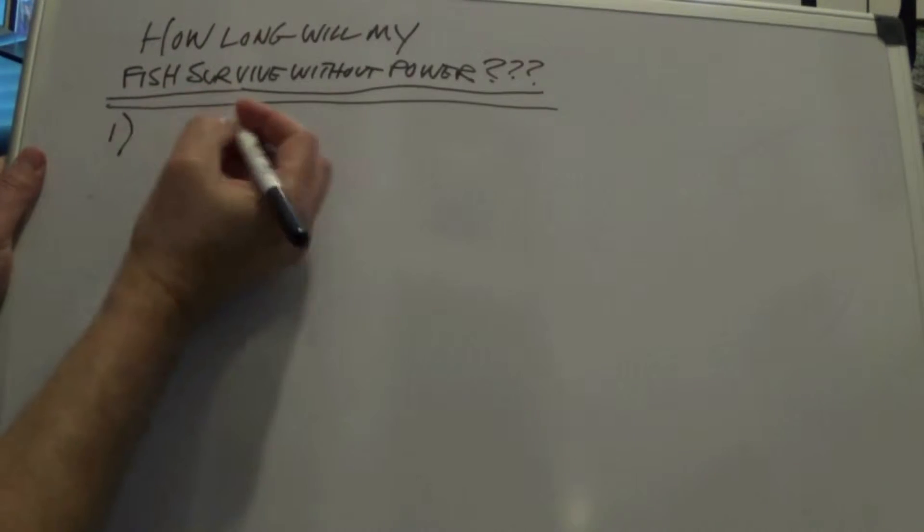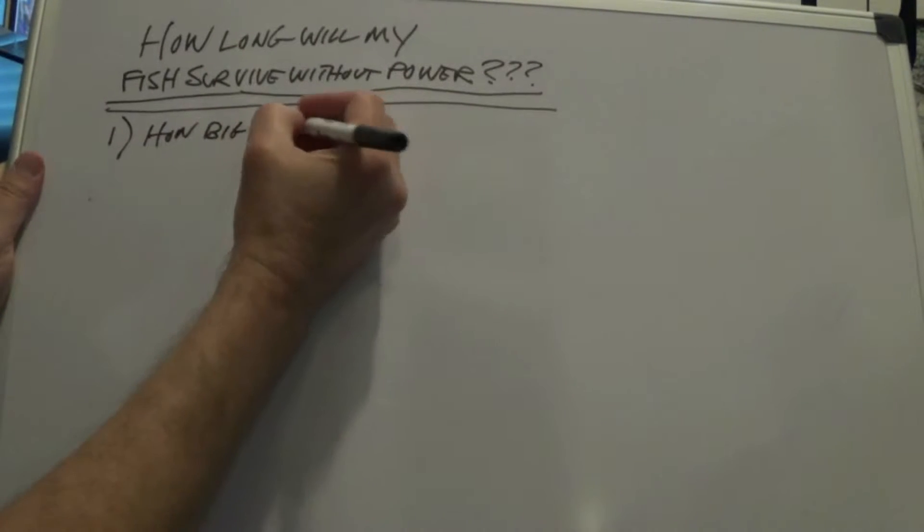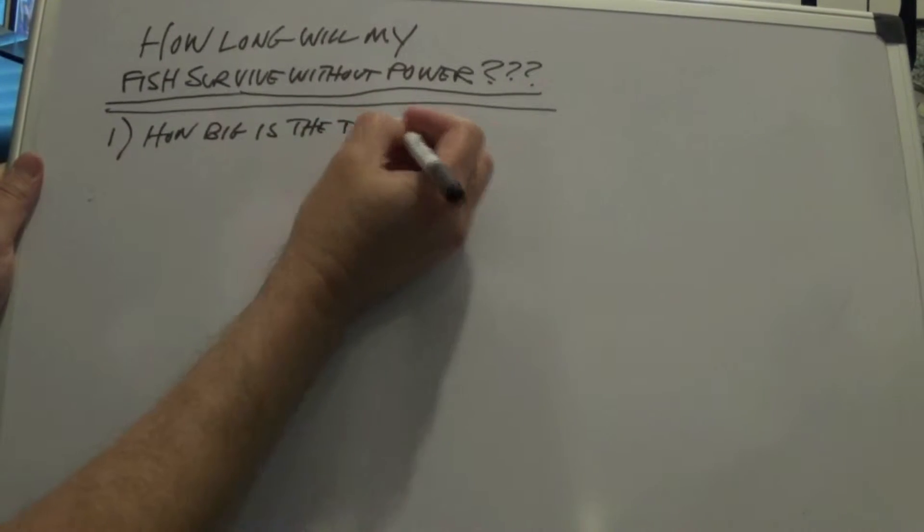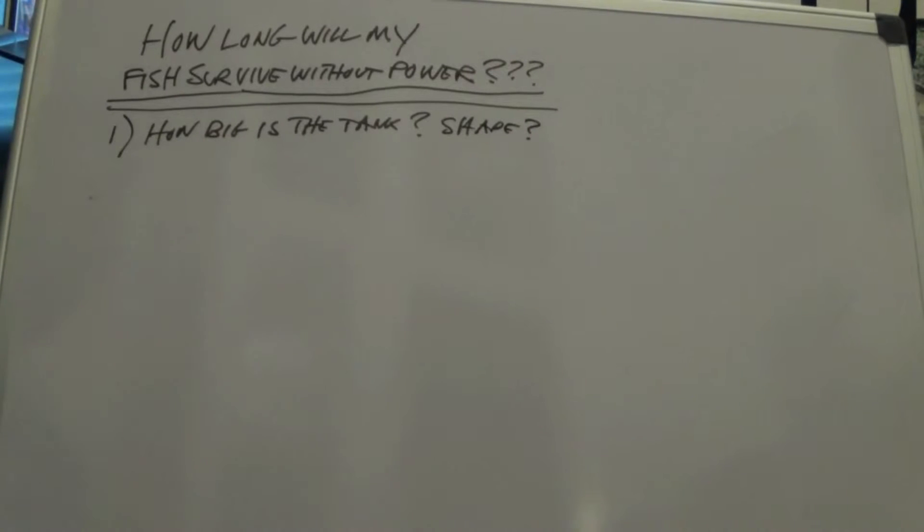Probably the most obvious one, how big is the tank? And also, what is the shape of the tank? If you have a large tank with a lot of surface area, you'll have better gas exchange at the surface of the water and the fish will live longer without circulation. If you have a tall, narrow tank or a smaller tank, there's less surface area, so those fish will struggle more quickly. They'll run out of oxygen more quickly. So a lot of it's going to depend on the size, surface area per volume is what we're looking at here.